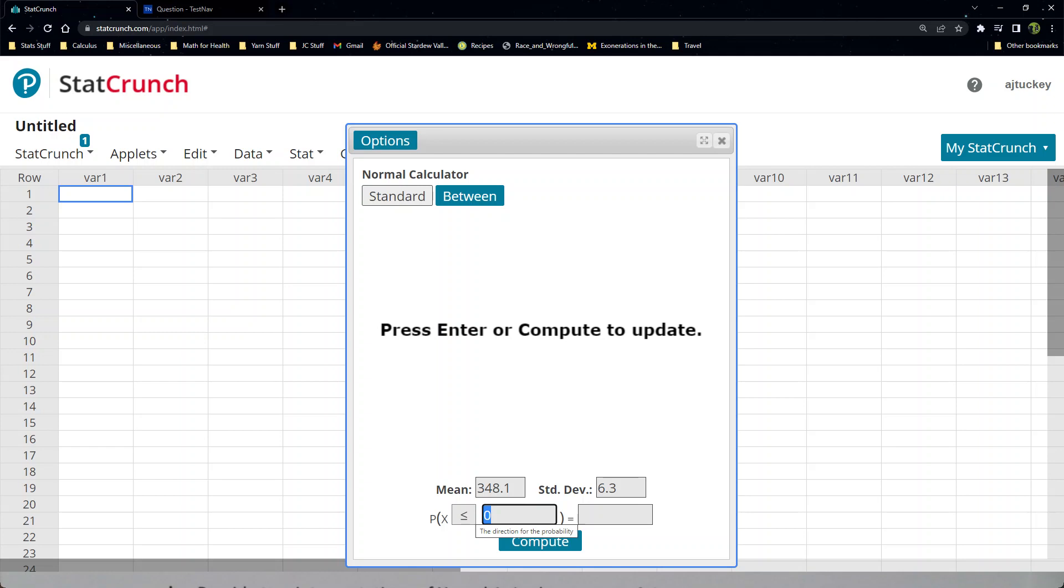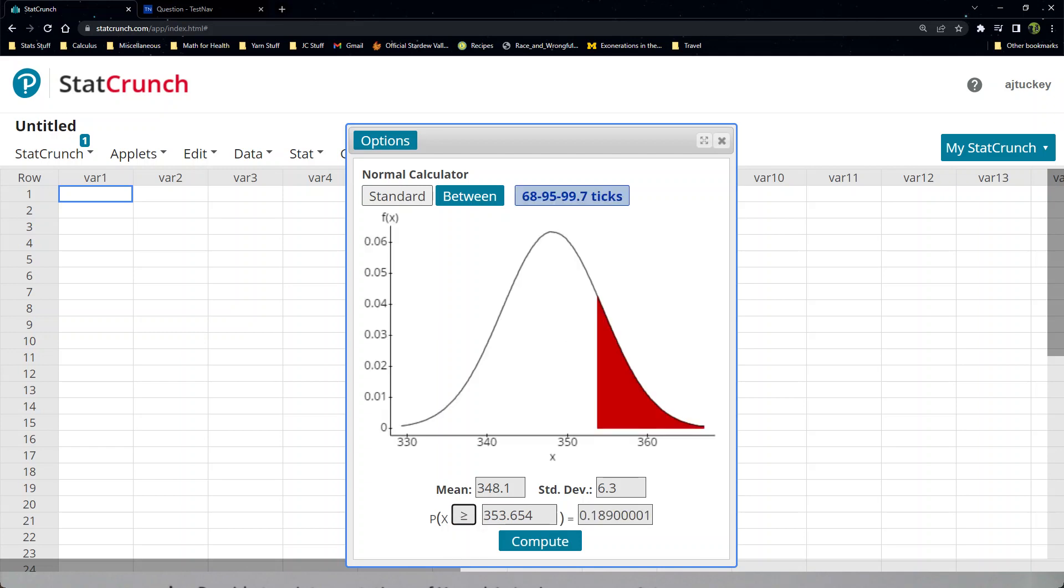And I know the x value is 353.654. And I don't want to click compute yet because I want to change that direction because I want it to go to the right side. And there it is. And I get that the area is 0.189.